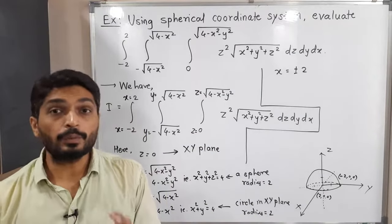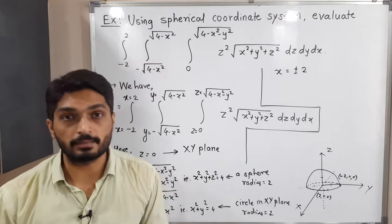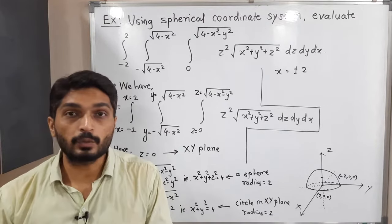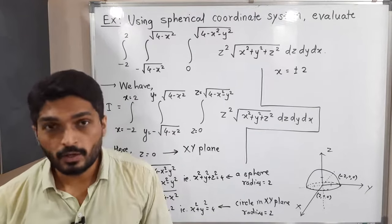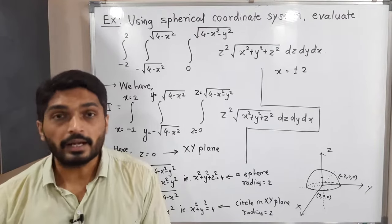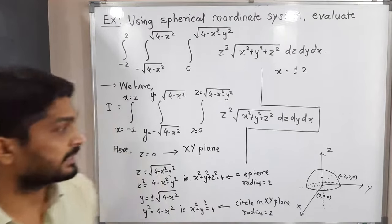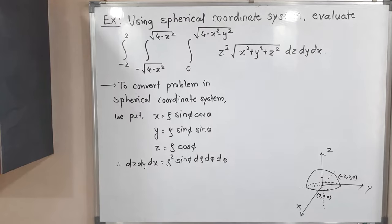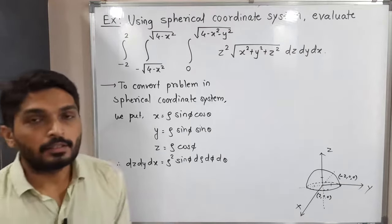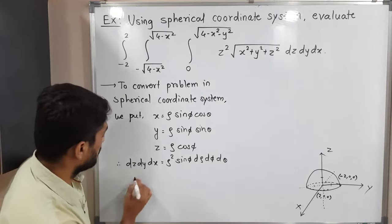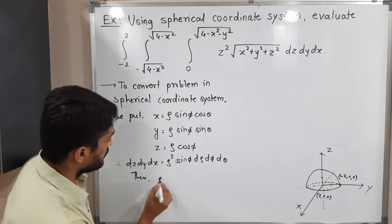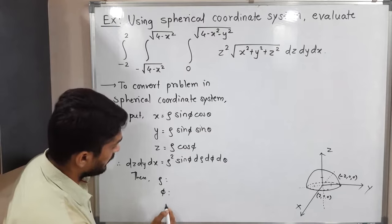We have to convert the problem into the spherical coordinate system. For that, we put X equal to ρ sin φ cos θ, Y equal to ρ sin φ sin θ, and Z equal to ρ cos φ. Also, dz dy dx equals ρ² sin φ dρ dφ dθ. Let us find the limits now — first the limits of ρ, next φ, and then θ.